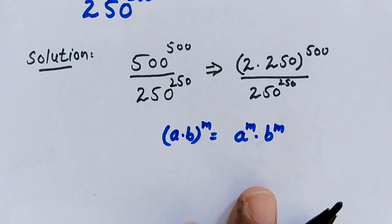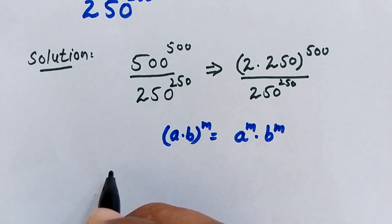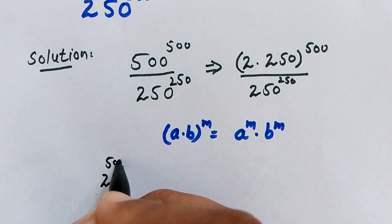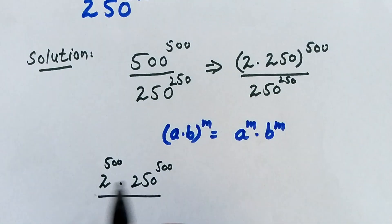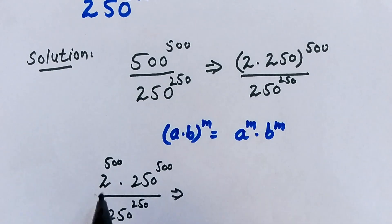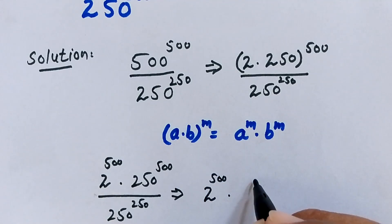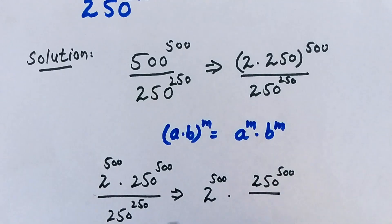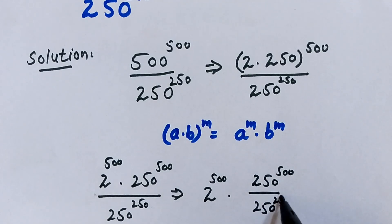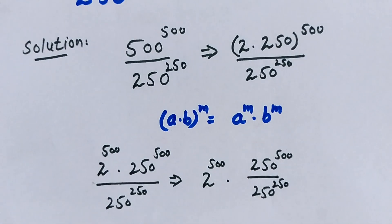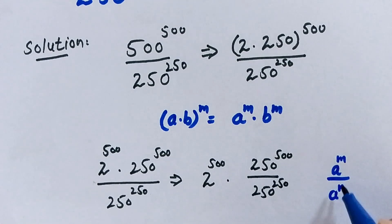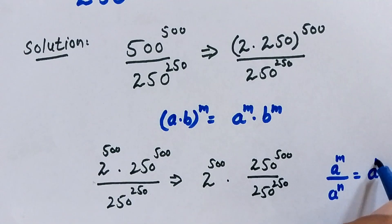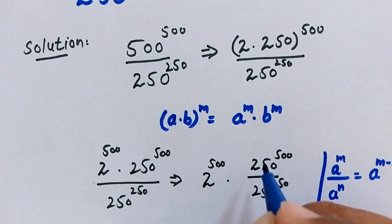Applying this rule gives us 2 to the power of 500 times 250 to the power of 500, divided by 250 to the power of 250. We then apply the rule: a to the power of m divided by a to the power of n, when the bases are the same, equals a to the power of m minus n.